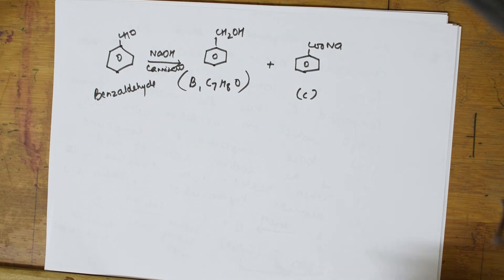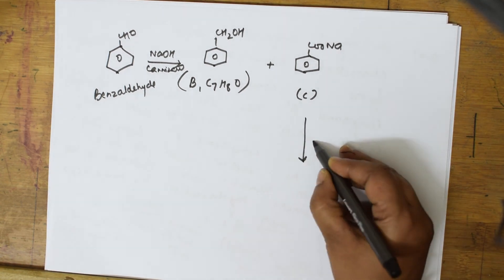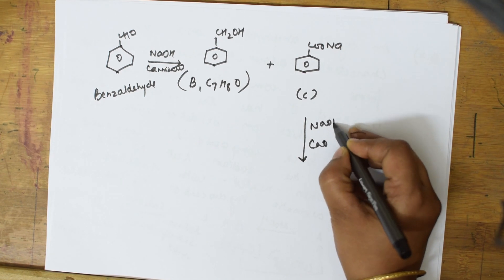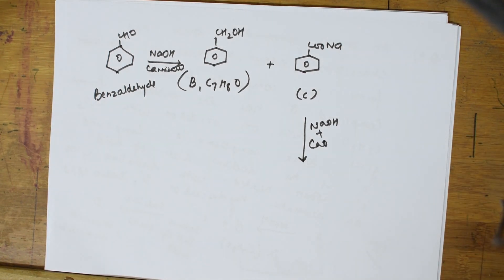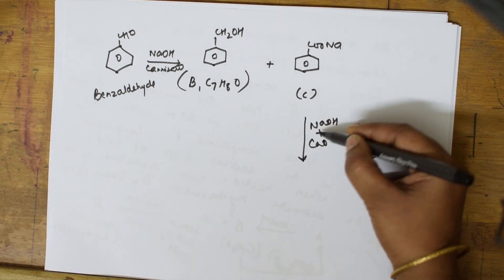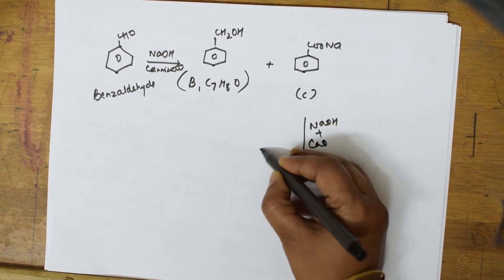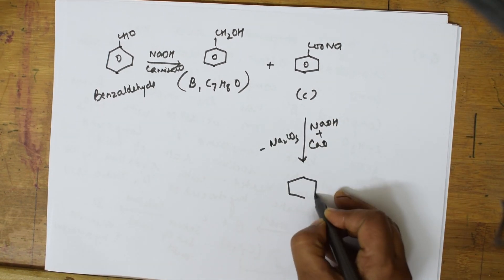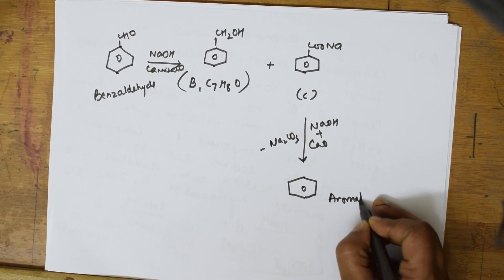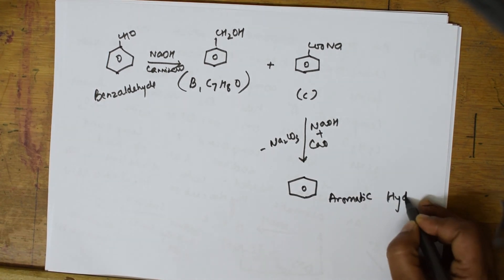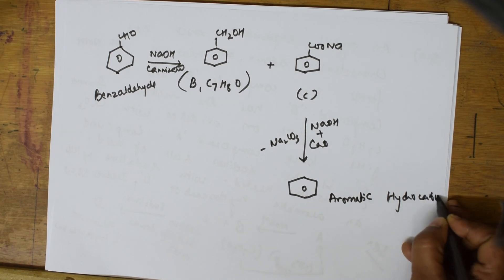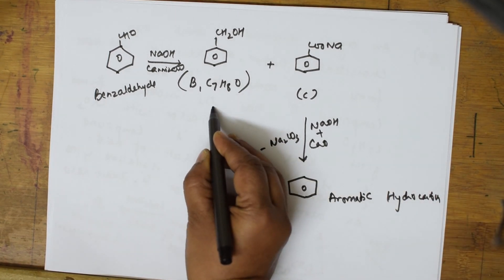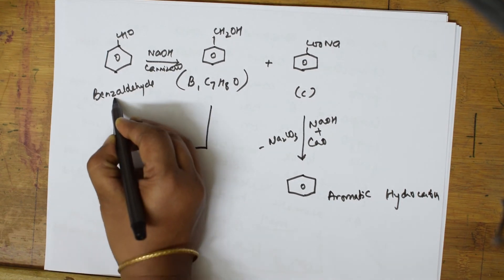Compound C (sodium benzoate) heated with soda lime — sodium hydroxide and calcium oxide — loses CO2 and Na2CO3, leaving benzene as the aromatic hydrocarbon D.